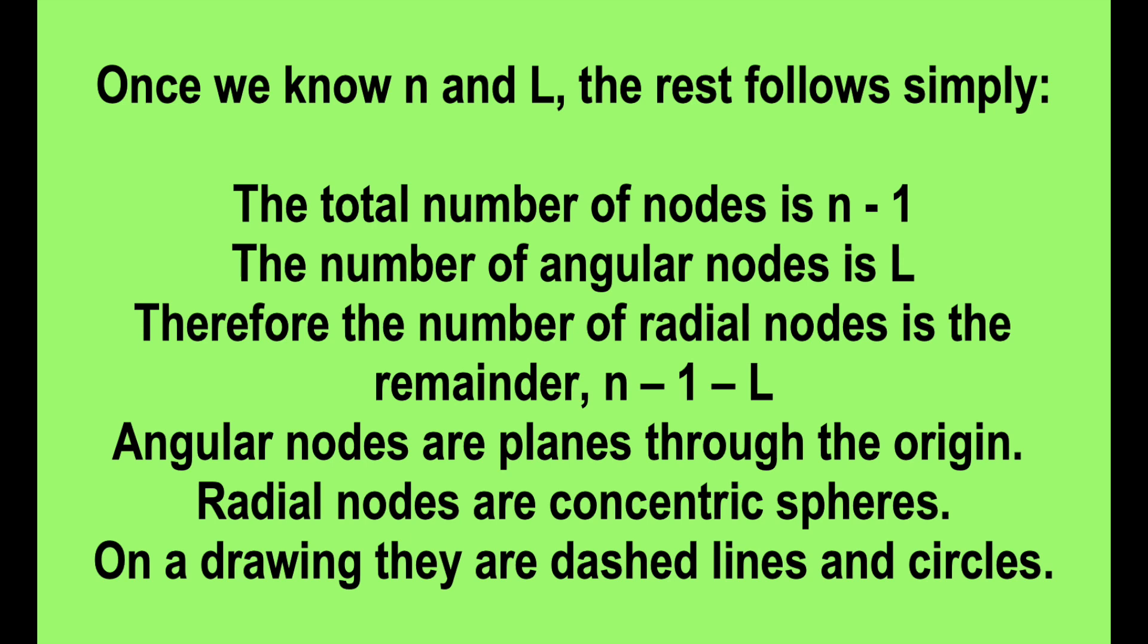The total number of nodes is n minus 1. The number of angular nodes is L. Then the rest of them have to be radial nodes, so n minus 1 minus L.